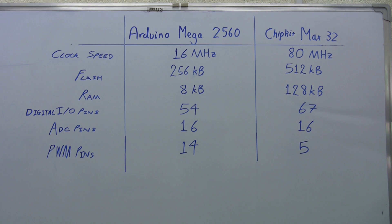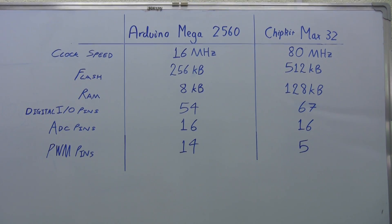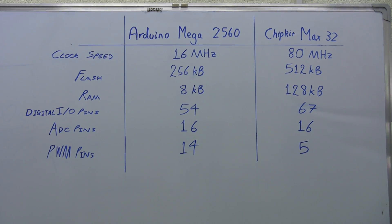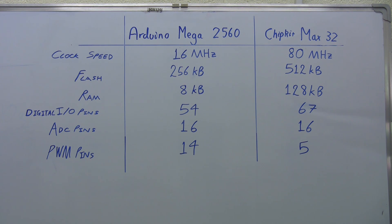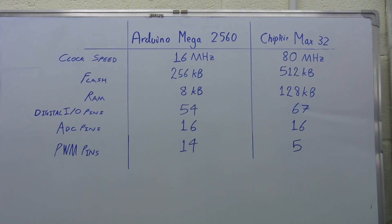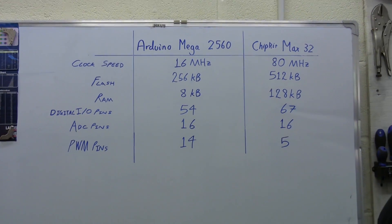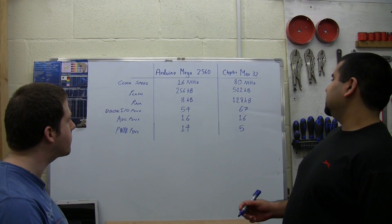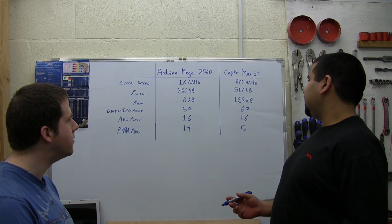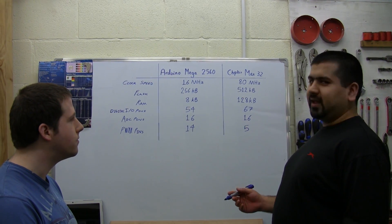This is like the processor of your computer. For every instruction you write in the software, with a faster clock speed such as the Max32 has, it's going to run faster. So you can do more complicated maths or more complicated functions and it will still run quickly. In this situation the chip kit definitely has the advantage, so we're going to give it a point.